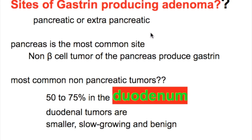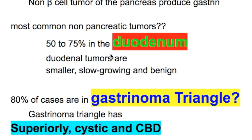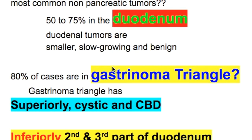What are the sites of gastrin-producing adenomas? They may be pancreatic or extra-pancreatic. The pancreas is the most common site of gastrin adenomas, produced by non-beta cell tumors of the pancreas. The most common non-pancreatic tumor site is the duodenum, accounting for 50 to 75% of cases; duodenal tumors are smaller, slow-growing, and benign.